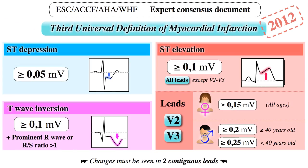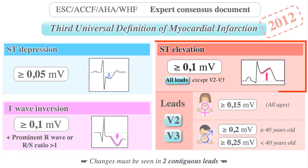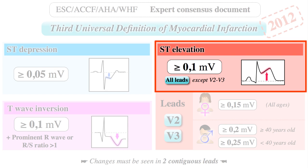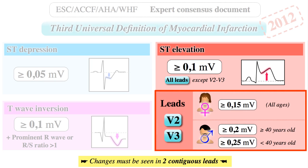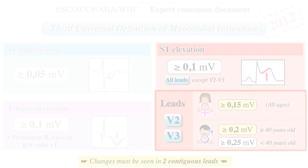The third universal definition of acute myocardial infarction published in 2012 defined significant ST elevations as new ST elevations in two contiguous leads of greater than or equal to 0.1 mV, or one small box of 1 mm. However, in leads V2 or V3 the cutoff is greater, and the ST elevation must be greater than or equal to 1.5 small boxes in women and greater than or equal to 2 boxes in men.